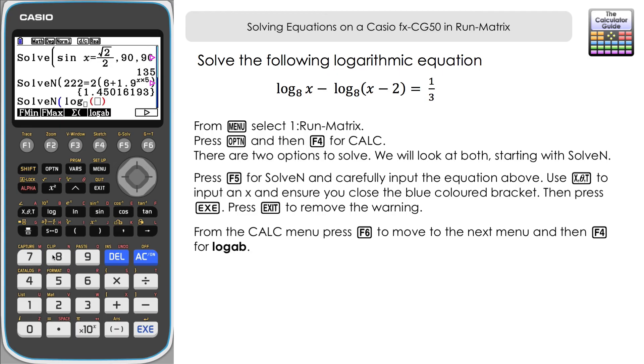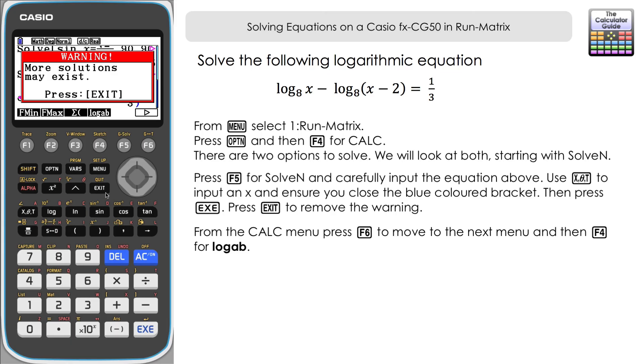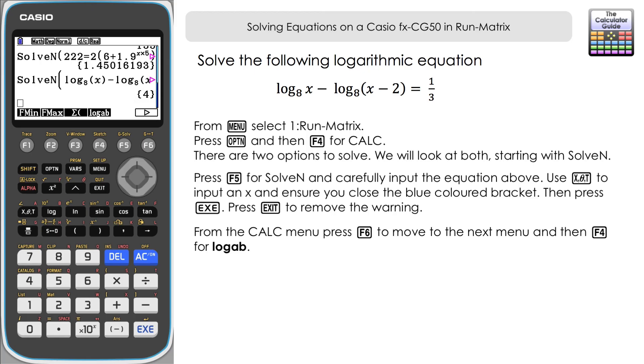If we press F4 and then we can type in log base 8 x. Navigate right minus log again base 8 x minus 2. Navigate right equals and then one third. Close the blue bracket once again. Execute. Just the warning of more solutions. Exit. And there we have our solution. So that's how we can use the solve features that are in the run matrix mode to be able to solve a variety of different equations that we may be asked to.